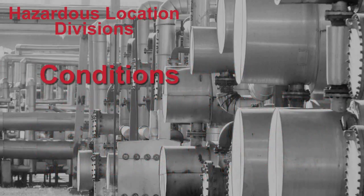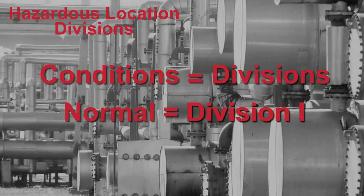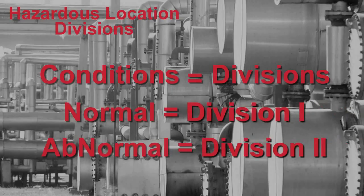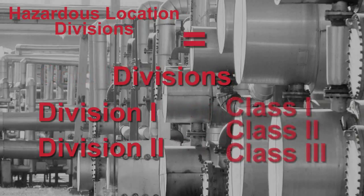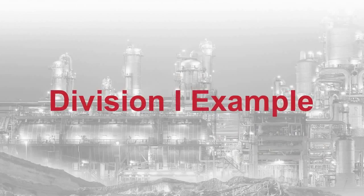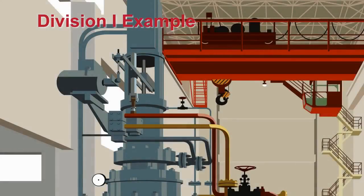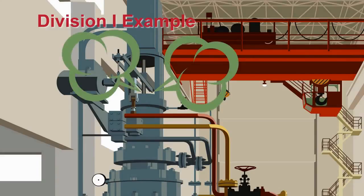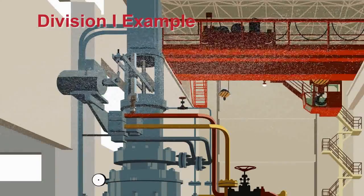The code writers have designated these two kinds of conditions as Division 1 (normal) and Division 2 (abnormal). Class 1, Class 2, and Class 3 hazardous locations can be either Division 1 or Division 2. Good examples of Class 1 Division 1 locations would be areas near open dome loading facilities or adjacent to relief valves in a petroleum refinery, because the hazardous material would be present during normal plant operations.